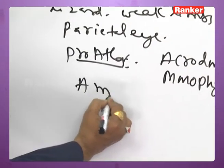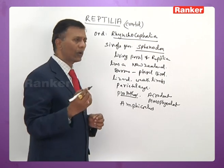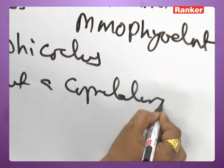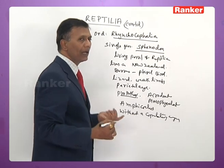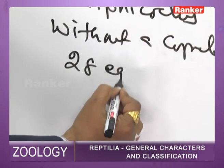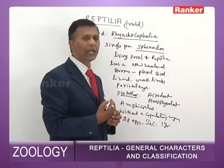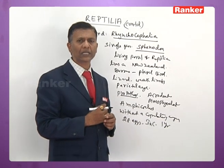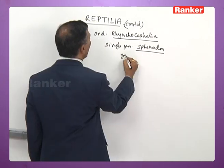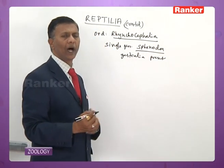The vertebrae of Sphenodon are amphicoelous. Importantly, it is the only reptile without a copulatory organ, yet fertilization is internal. It lays only about 28 eggs in its entire lifespan, and the incubation period of each egg is almost one year. It is at the verge of extinction.